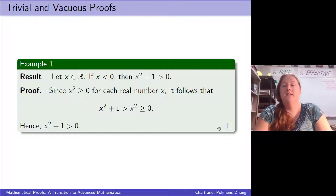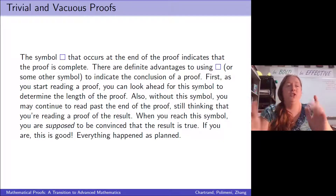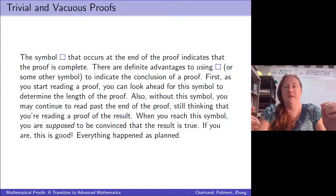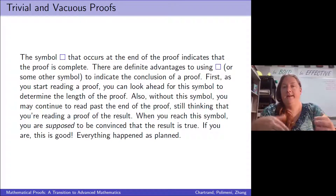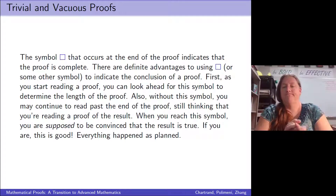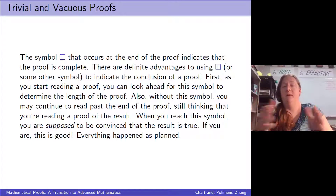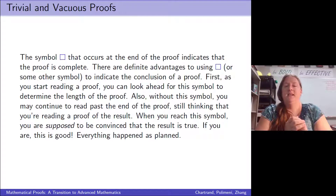You might notice a little box at the bottom — this box tells you the proof is over. These are helpful in your textbook so you can see where a proof ends. It also signals that you should be convinced the statement is proven. Another common notation is a pair of diagonal lines at the end. Using some marker to indicate the end of a proof is good practice.